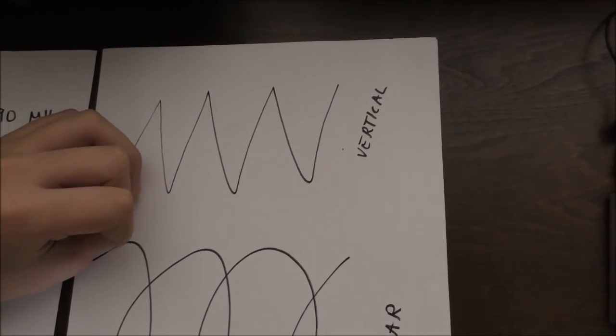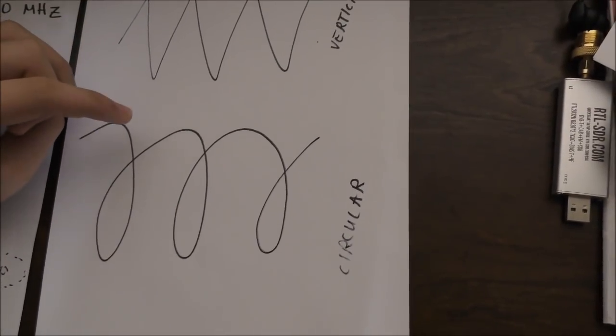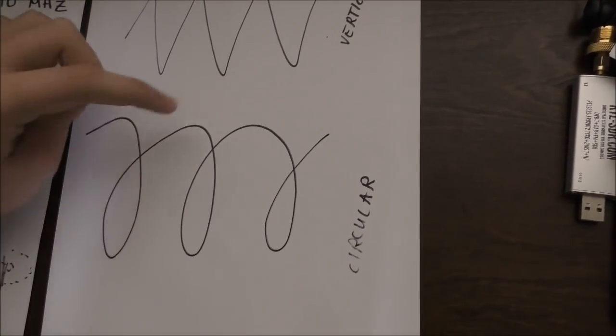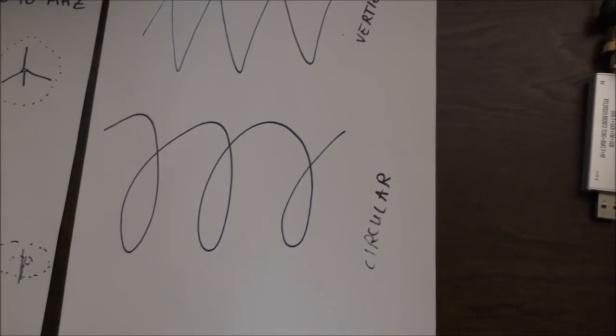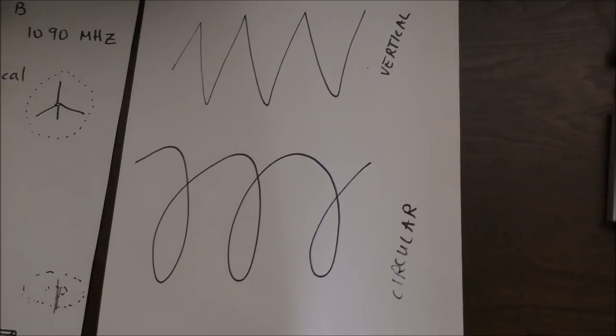But the challenge of this project is that since airplanes move really fast, their signals turn from vertical to circular, kind of in this shape. So, my challenge today is to build an antenna that's very good at receiving circularly polarized signals.